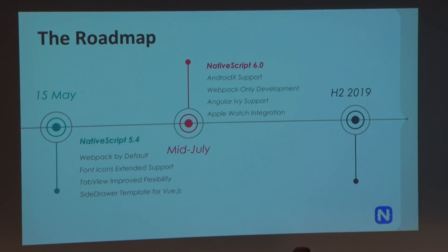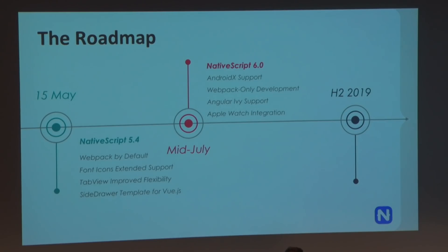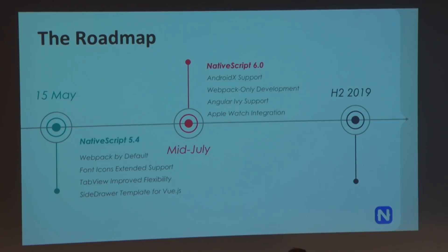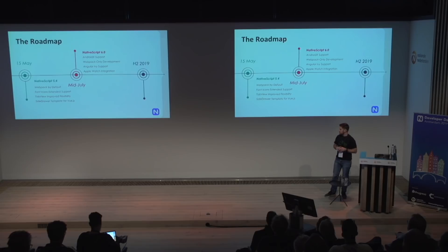The next release is going to be a major one, 6.0, and it's major because it comes with some breaking changes. First, I'd like to talk about AndroidX support. AndroidX is the new incarnation of the support library for Android. With 6.0, every application using the support library will have to use the AndroidX library instead, and the same applies to plugins. We are already in touch with the biggest plugin authors and providing guidance and instructions on how to do the transition — it's pretty trivial. Moving forward, all new fixes and improvements in the Android support library will come as part of AndroidX, so we want to enable it.